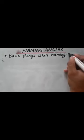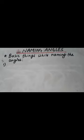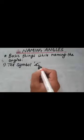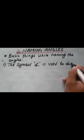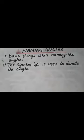The very first point which we need to consider while naming the angles is the symbol of the angle — that is, how can we denote the angle. The symbol of an angle is used to denote the angle.